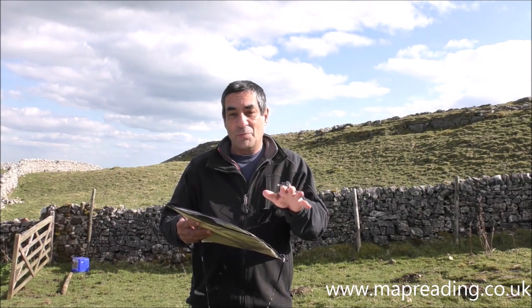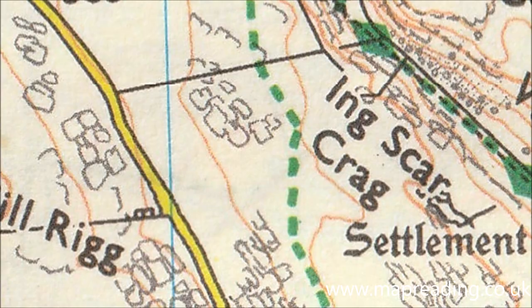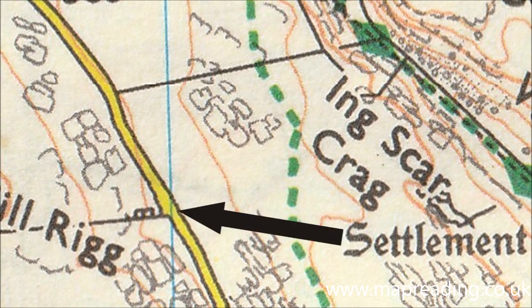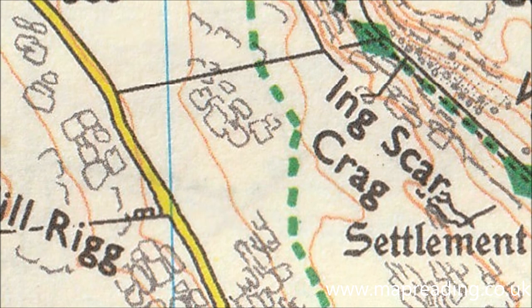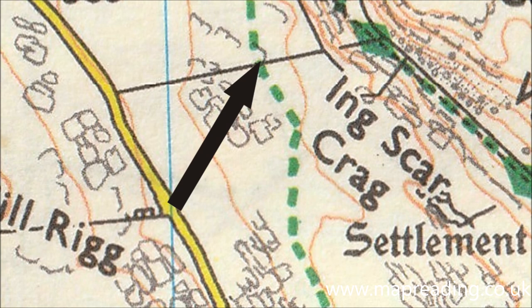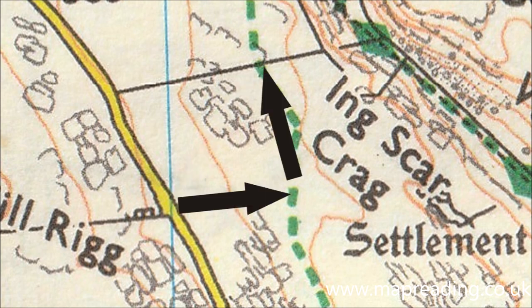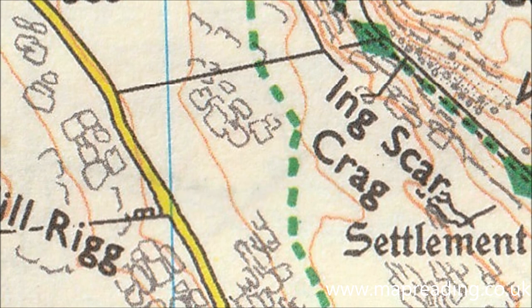I know where I am and where I want to walk to. I'm here where the black arrow is on screen, and I want to walk to the junction of the footpath and the wall shown on screen. Normally I'd just orientate my map, which would show me the direction, and walk straight across the countryside to the track and wall junction — or just walk straight down the field and turn left. But if the weather's bad, it's night time, or conditions are difficult, it's better to use handrails.